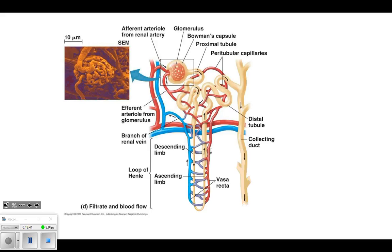The filtrate will start traveling through these tubules in this long loop and back up. During this whole part, your body is reabsorbing what it shouldn't have given off. When it first filters, it gives off a lot. The rest of the tubule is reabsorbing some of the water it shouldn't have given off, reabsorbing some of the salts. All of these capillaries are wrapping around the tubules so they're able to take back some water, take back some salt, but also give off some things like drugs or toxins. The filtrate is becoming more concentrated as it works through the tubule.